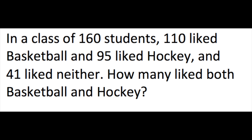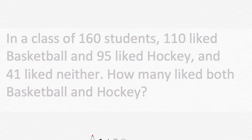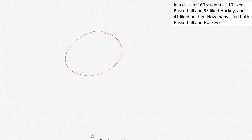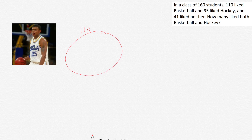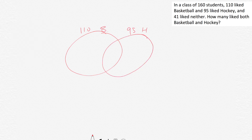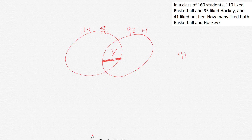Here's a problem: in a class of 160 students, 110 liked basketball and 95 liked hockey, and 41 liked neither. How many liked both basketball and hockey? Pause and give it a shot if you want. So we have 110 who like basketball, 95 who like hockey, an overlap we'll call X, and 41 who like neither.